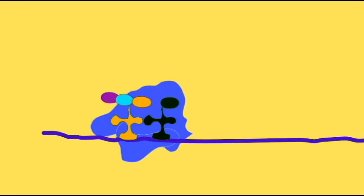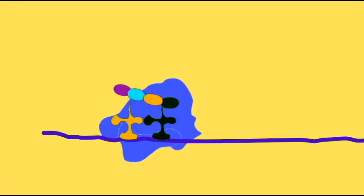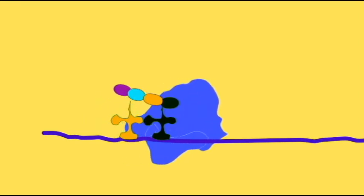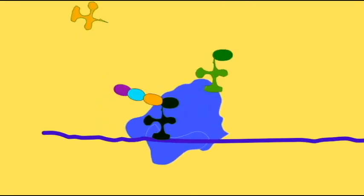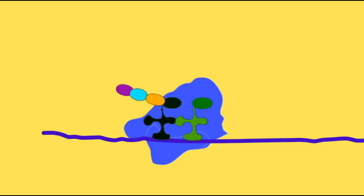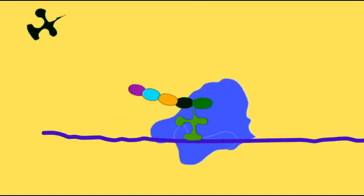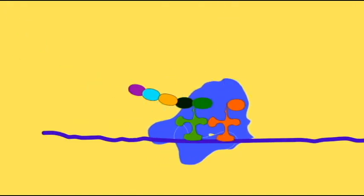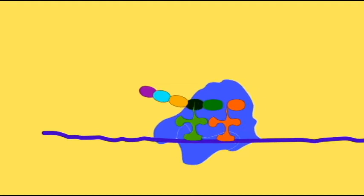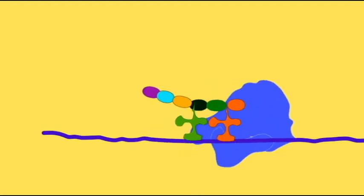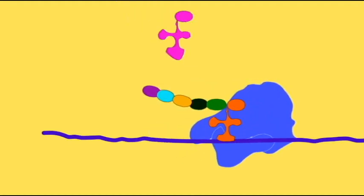The ribosome then moves so that the tRNA which was in the a-site is now in the p-site with two amino acids attached to it. Now a third amino acid can approach the ribosome and join the now empty a-site.